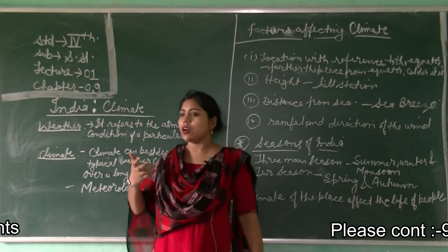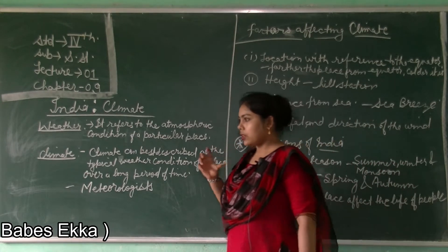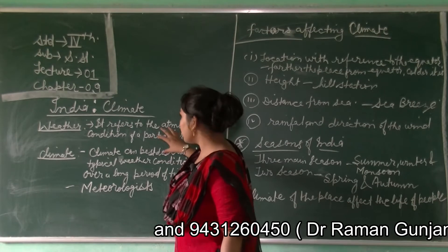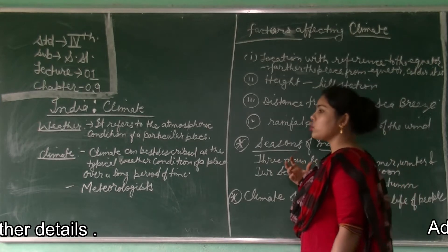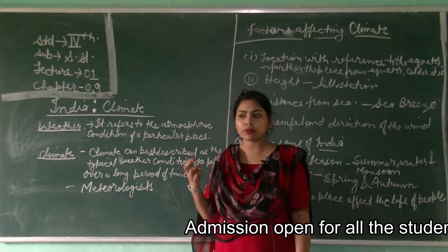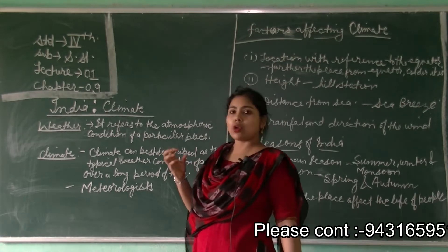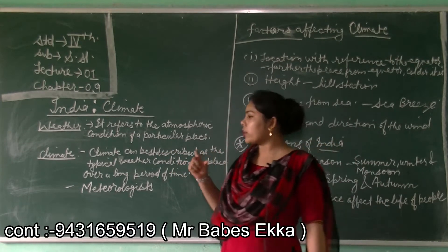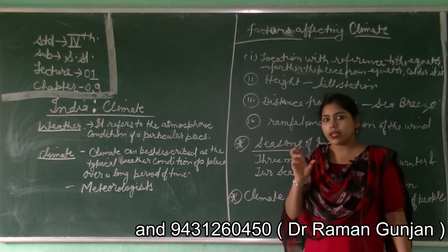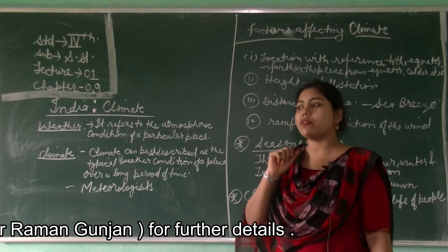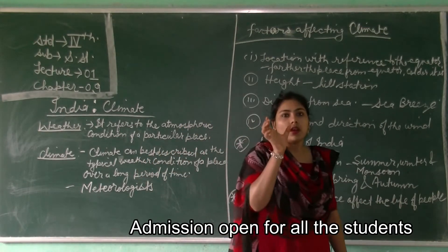Before starting the climate, we will start from weather, because it is the situation which changes day to day. Weather refers to the atmospheric condition of a particular place. For example, if we say that today is hot or it is cloudy, we are talking about the weather — it is an atmospheric condition for a short period of time. For example, the temperature of Delhi on Tuesday is 35 degrees Celsius — that means we are referring to the weather of Delhi on a particular day.